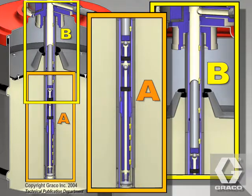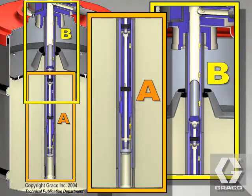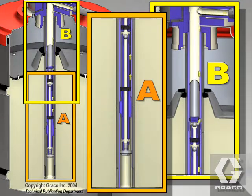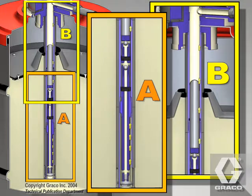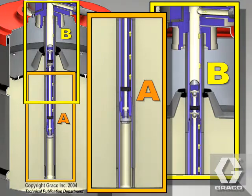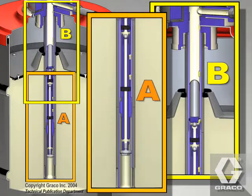On the next downstroke, the lower check closes and the upper check opens. As the pump piston moves down, the grease transfers past the upper check. Since the piston is half the size of the cylinder, half of the grease is pumped on this downstroke.